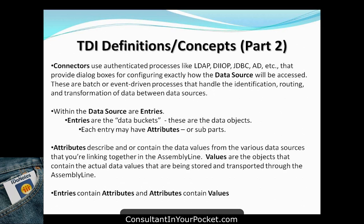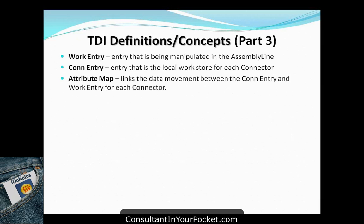Entries contain attributes, and attributes contain values. You'll also see references to work entries — the entry being manipulated in the assembly line — and connector entries, which are the local work store for each connector. The attribute map, part of the connector, is key for understanding how different data sources map together. For example, if you've got a SQL database and you want to link entries to a Domino database, you use that attribute map to link the two.